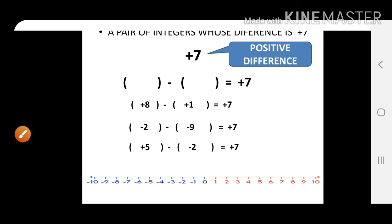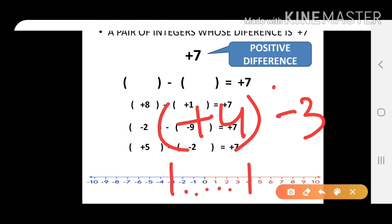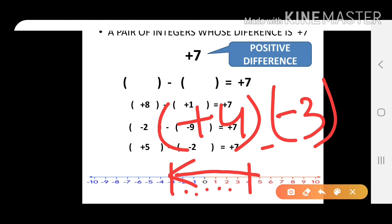Let's try another example for a gap of 7. Take minus 3 and go 7 steps to the right: 1, 2, 3, 4, 5, 6, 7 — we reach plus 4. So we can take plus 4 and minus 3. The difference between plus 4 and minus 3 is plus 4 minus of minus 3, going from high to low, giving a positive difference of plus 7.